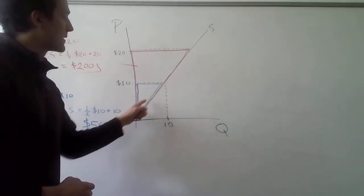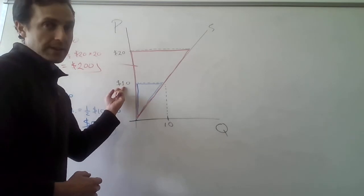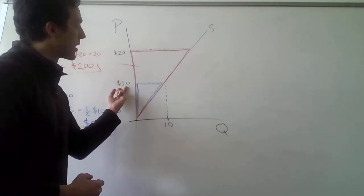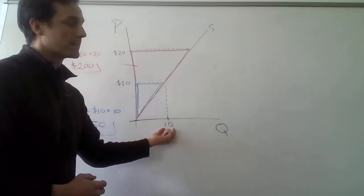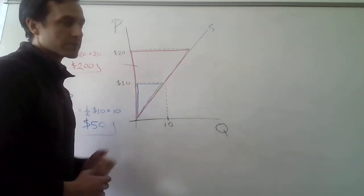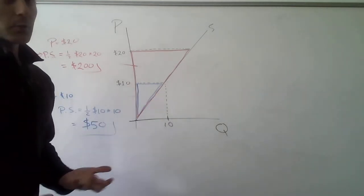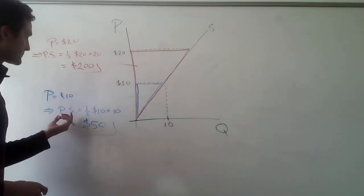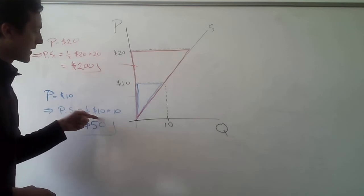So we have outlined here in blue, that is the producer surplus when the price is $10, right? When the price is $10, you go to the supply curve, that means that this firm wants to supply 10 units at that price. And then, of course, the producer surplus at that price and quantity is the blue triangle here. And, of course, the area of this triangle is going to give us the producer surplus, and it equals 1 half 10 by 10, right?